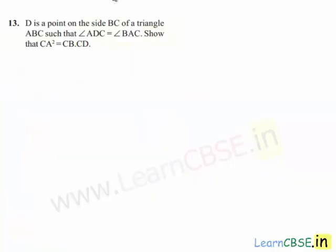Moving on to the 13th question: D is a point on side BC of triangle ABC such that angle ADC is equal to angle BAC. Show that CA squared is equal to CB into CD.